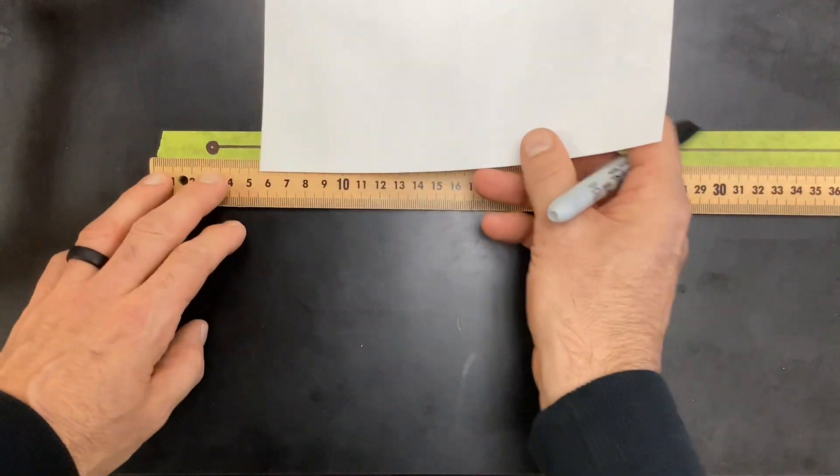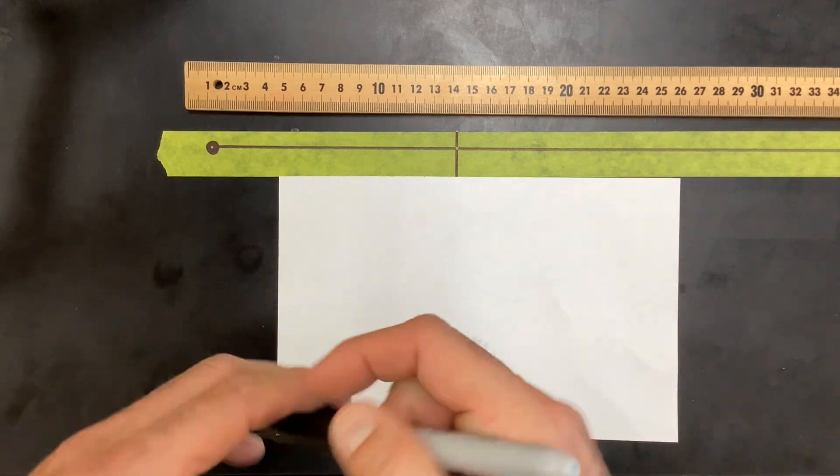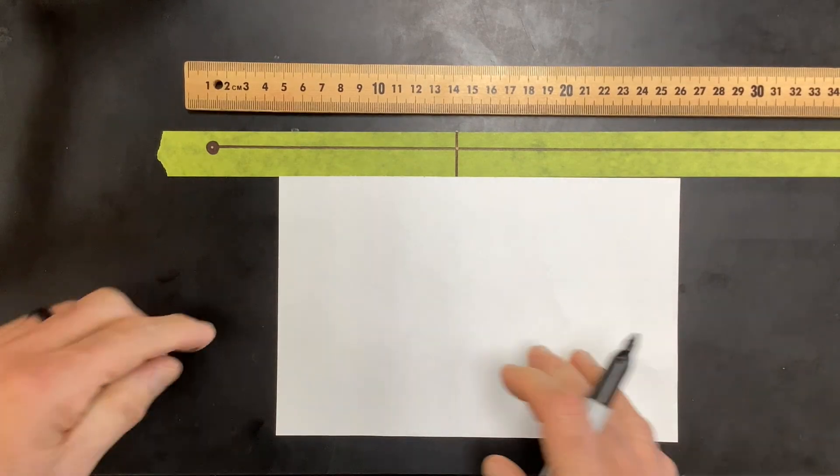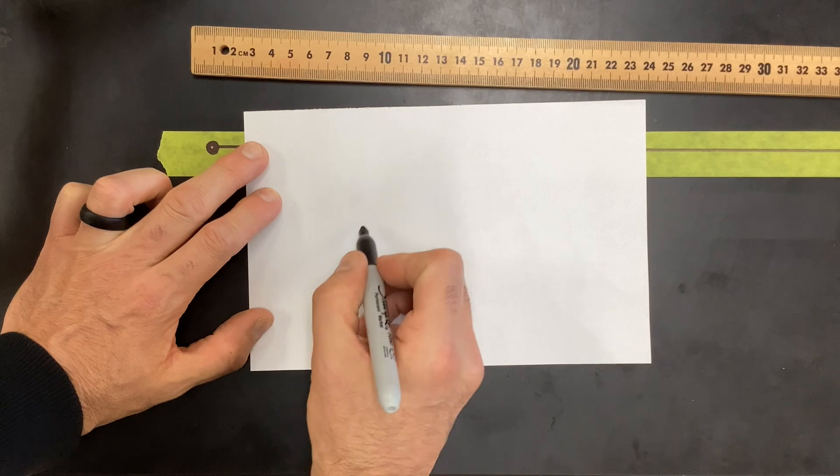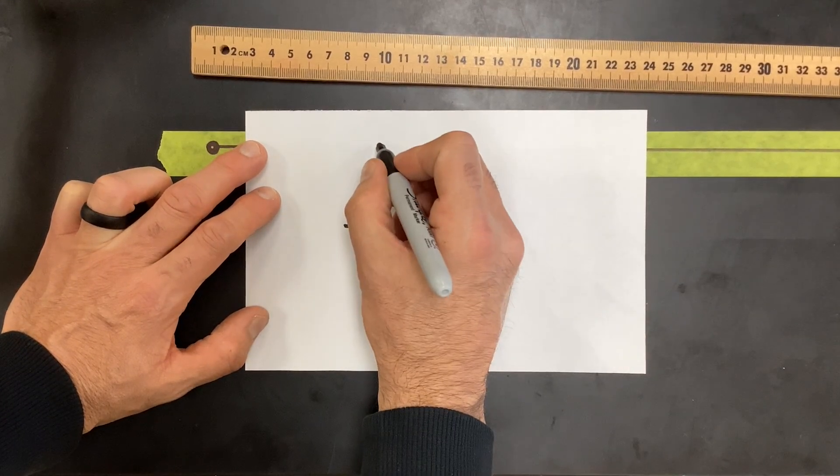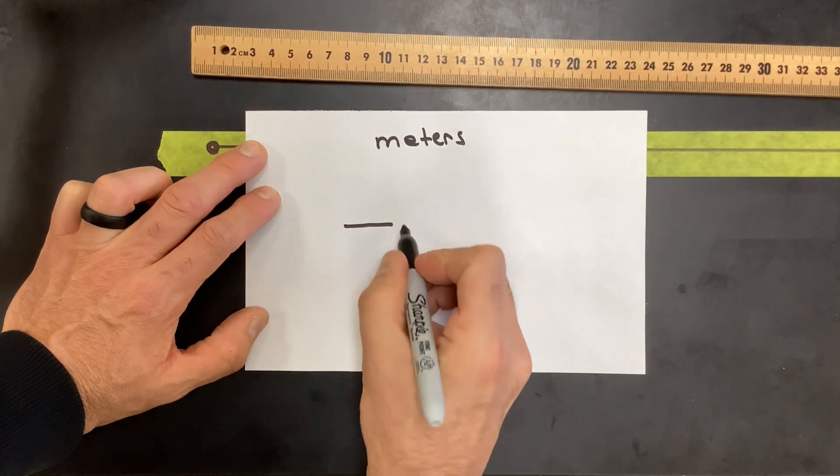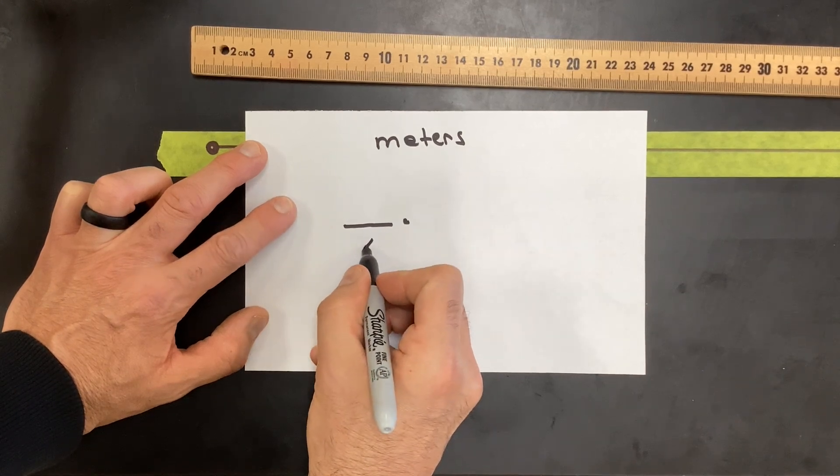Alright, so here we go. If we're looking at our place value, let's put place value down. This would be a meter, it's in the ones place. This is if we're measuring in meters, I guess you could say, but this is the ones place or this would be a meter.